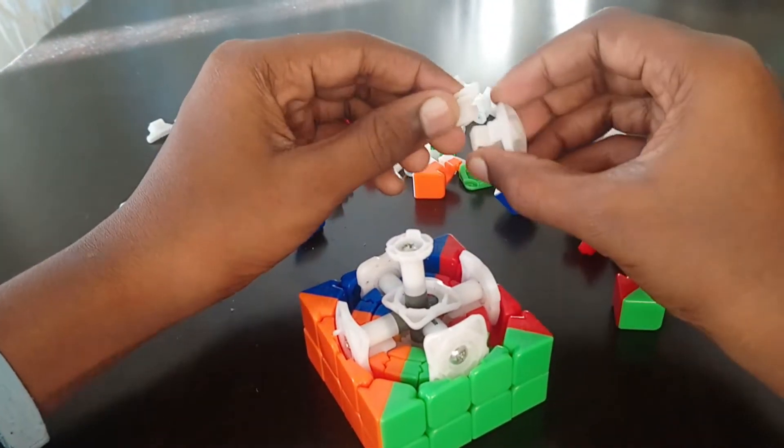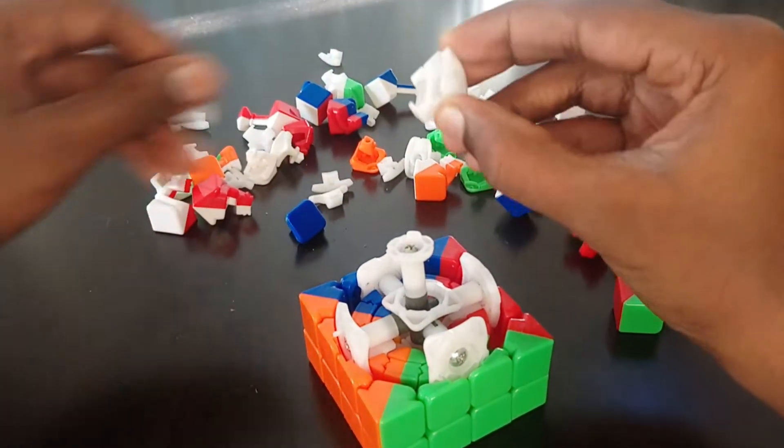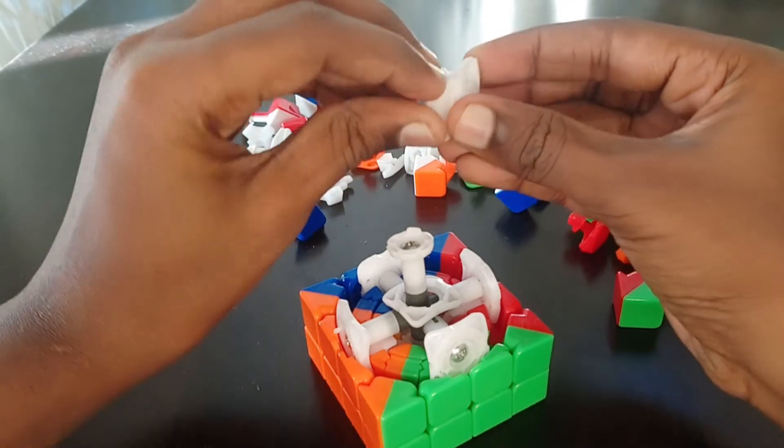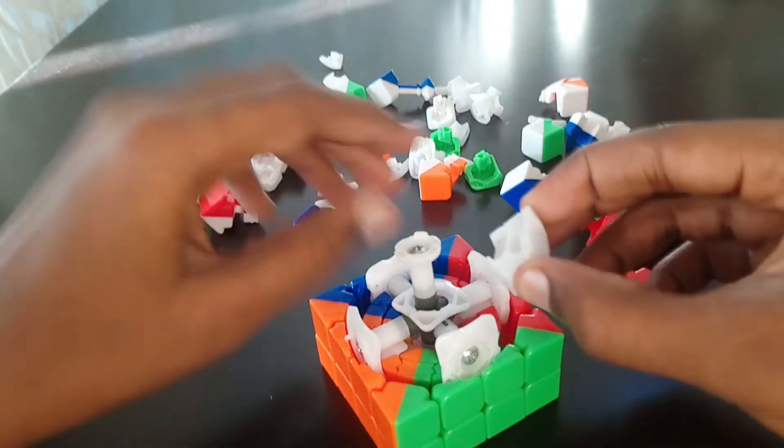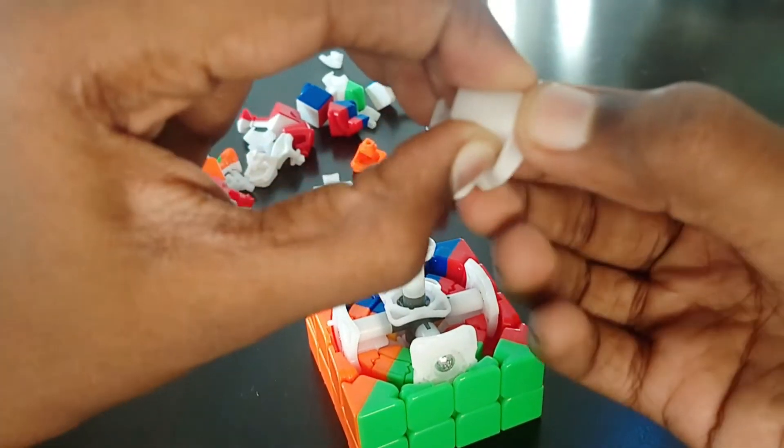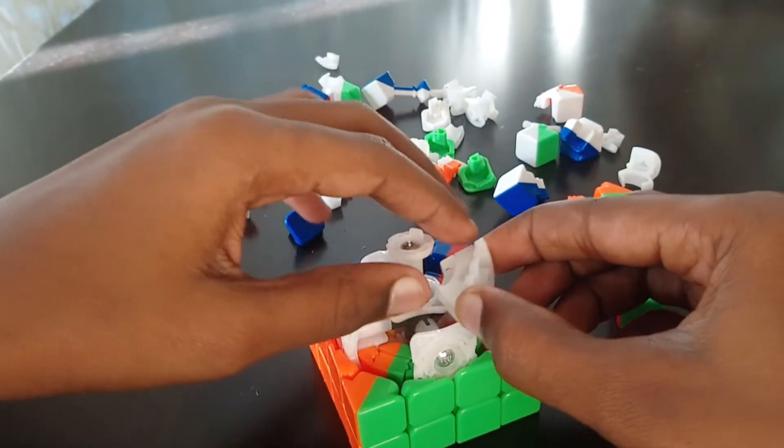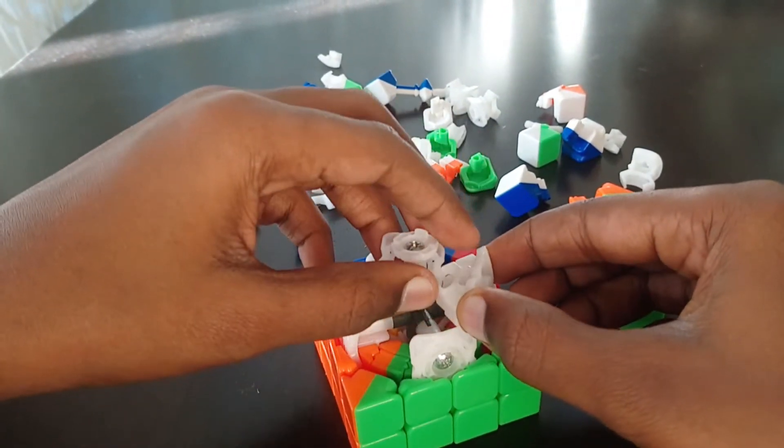So here guys, you take the white parts again. This is actually like the structure of the cube. So again, take the white parts and then fit it through the tiny holes, the gaps between the white structure.